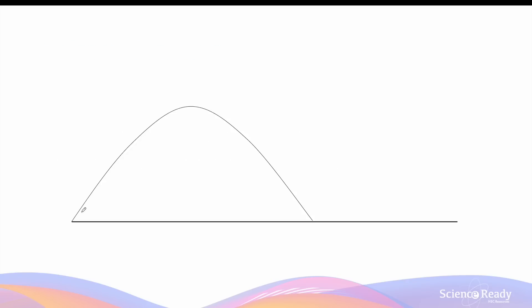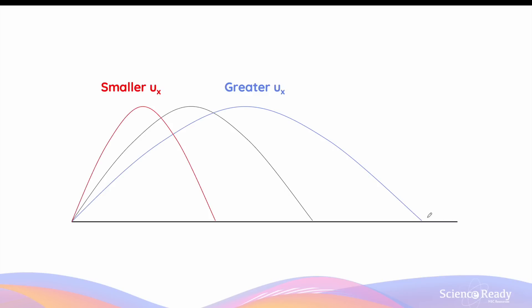Consider the parabolic motion of a projectile starting from a vertical displacement of zero, reaching the maximum height, and coming back down to the same level. When we increase the horizontal component of initial velocity — greater ux — we expect the range of the parabolic motion to increase. When we decrease ux, the range will also decrease.